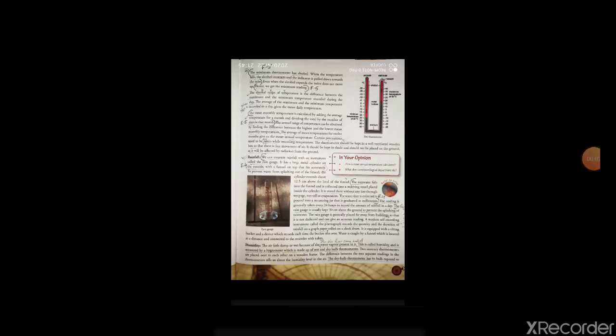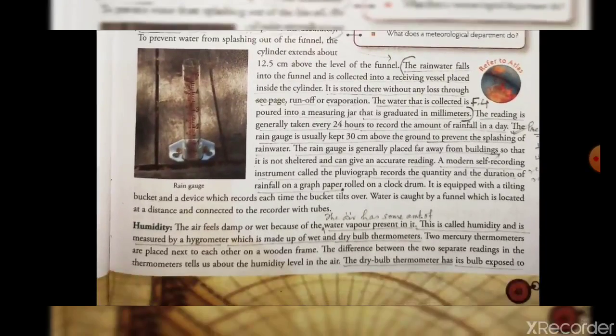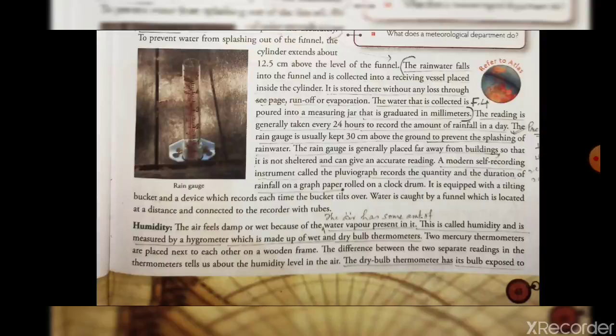Now let us learn to measure humidity of the place. The air has some amount of water vapor present in it. This is called humidity and it is measured by a hygrometer which is made up of wet and dry bulb thermometers.